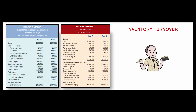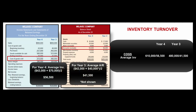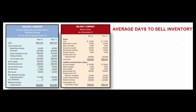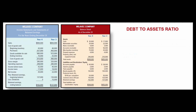We do a similar calculation for inventory: how quickly are we filling and emptying our warehouses? Take cost of goods sold over average inventory — inventory turnover. For year four that's 10.8; for year three it's 11.57. Dividing 365 by inventory turnover gives average days to sell inventory: 34 days for year four and 32 days for year three.